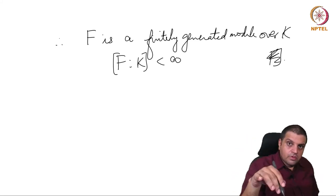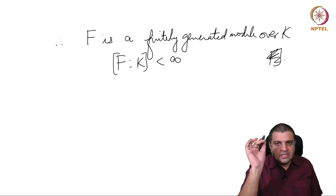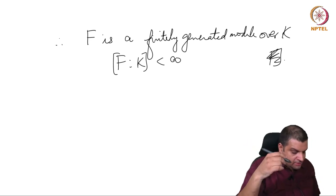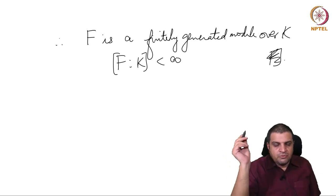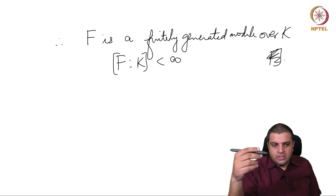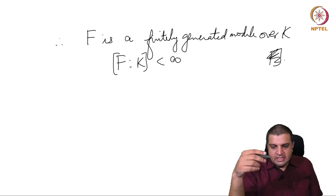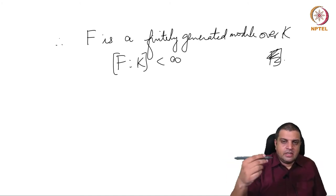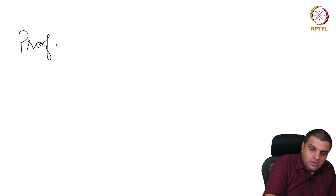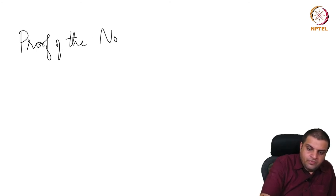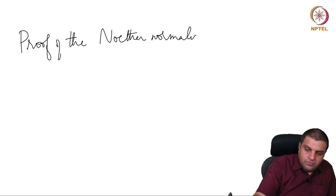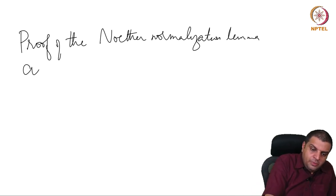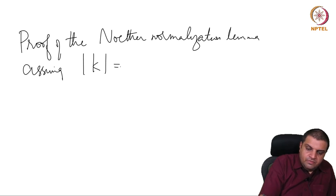We will give the full proof in the next lecture. However, let us discuss a simpler proof which works for infinite fields, which can also be used — at least for fields that are sufficiently large — as a trick to construct these things in a computer. We will give a quick proof of the Noether normalization lemma assuming K is infinite.